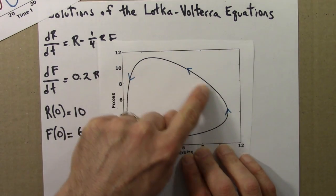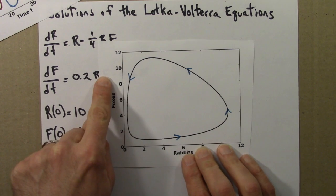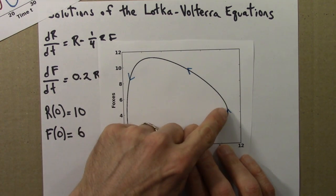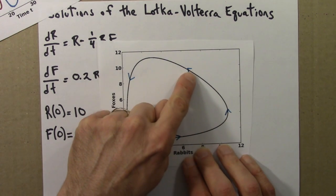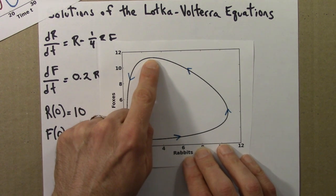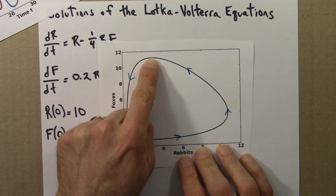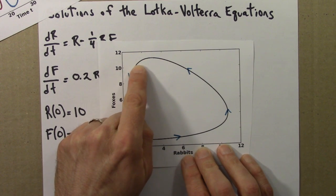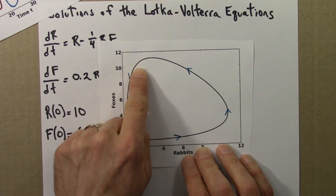This curve is moving up in the fox direction, in the y direction. So the rabbits are decreasing but the foxes are still increasing until we get to here. And here, the fox population starts to crash because there aren't enough rabbits and we're starting to have hungry foxes again.